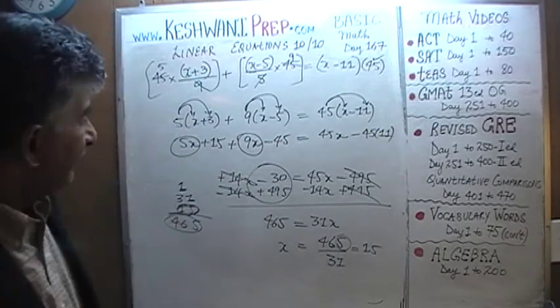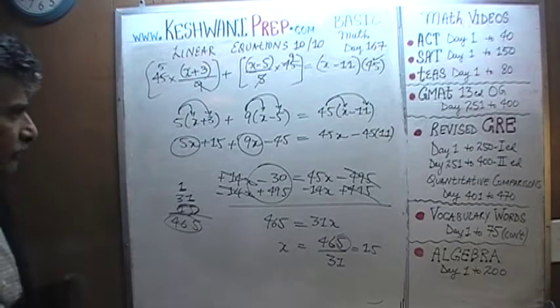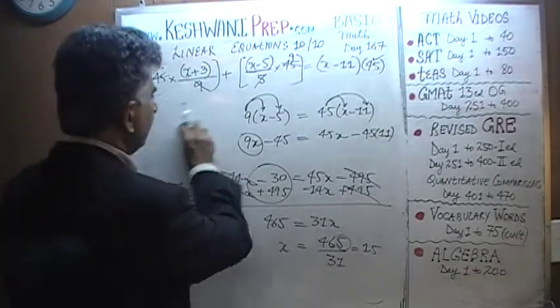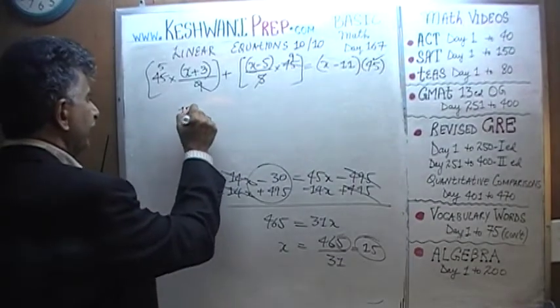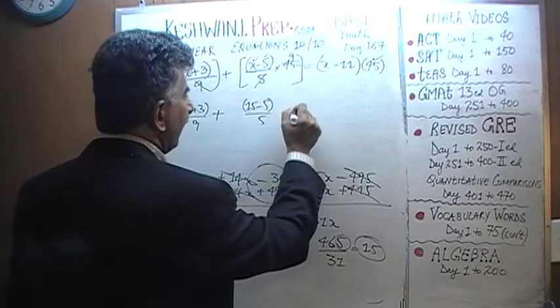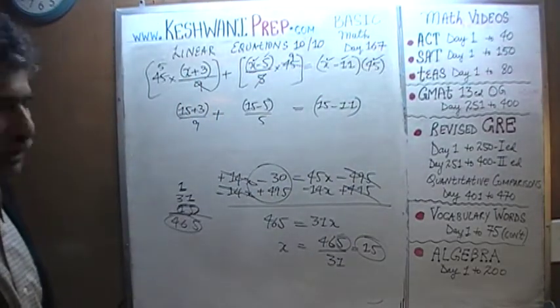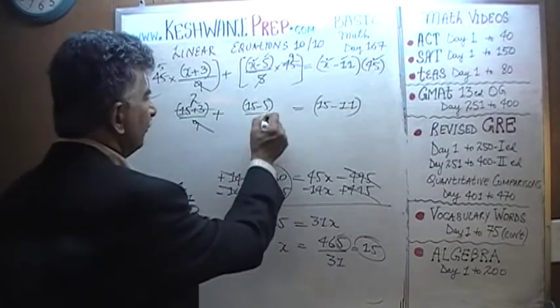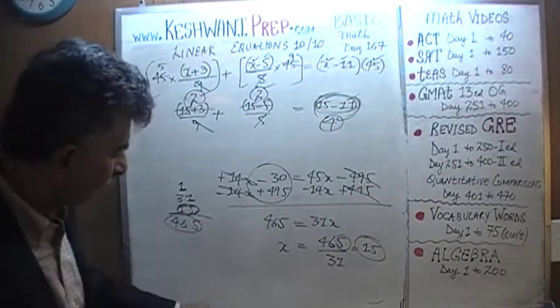Let's put it back in the equation. Make sure we have the right answer. That's the last thing we have to do. We have to put it back in the equation, make sure we get the right answer. I need the room. I'm going to erase these two steps. We're going to verify it very quickly. We had x plus 3 over 9. Our x is 15. So we have 15 plus 3 over 9 plus x minus 5, 15 minus 5 over 5 has to equal x minus 11, 15 minus 11. As you can see, the verification is very simple. Very straightforward. It only takes a few seconds. 15 plus 3 is 18. 18 divided by 9 is 2. 15 minus 5 is 10. 10 divided by 5 is 2. 2 plus 2 equals 4. 15 minus 11 is 4. 4 equals 2 plus 2. It works. We have the right answer.